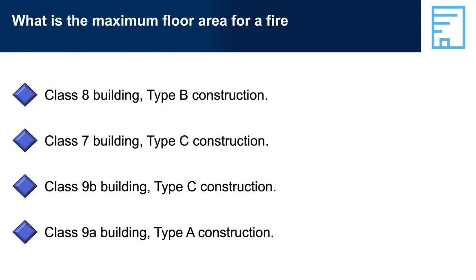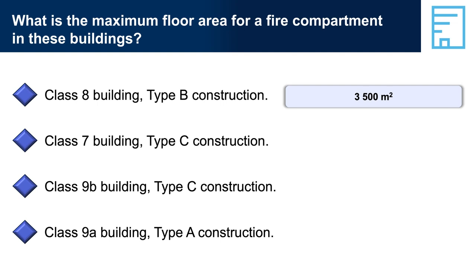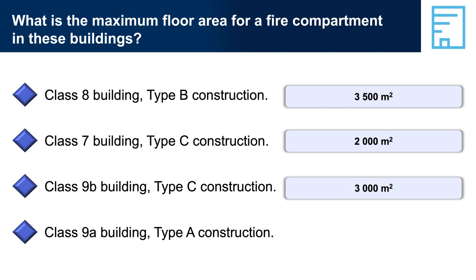What is the maximum floor area for a fire compartment in these buildings? Class 8 building, Type B construction: max floor area = 3,500 m², max volume = 21,000 m³. Class 7 building, Type C construction: max floor area = 2,000 m², max volume = 12,000 m³. Class 9B building, Type C construction: max floor area = 3,000 m², max volume = 18,000 m³. Class 9A building, Type A construction: max floor area = 5,000 m², max volume = 30,000 m³.